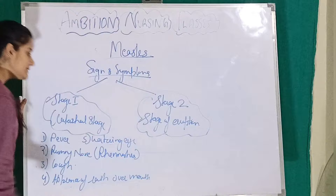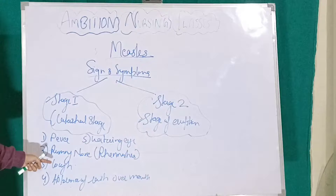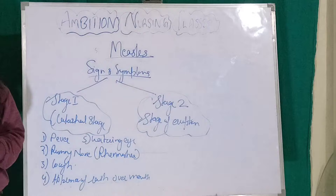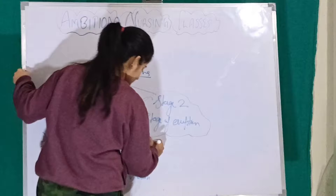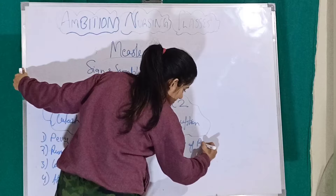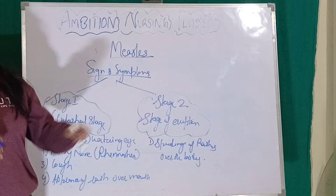So these are all the signs and symptoms seen in the catarrhal stage — fever, runny nose, cough, appearance of rashes over the mouth, and watery eyes — meaning the measles virus has just entered the body. In stage two, the stage of eruption, the rashes spread over the entire body — the red spots spread all over the body.